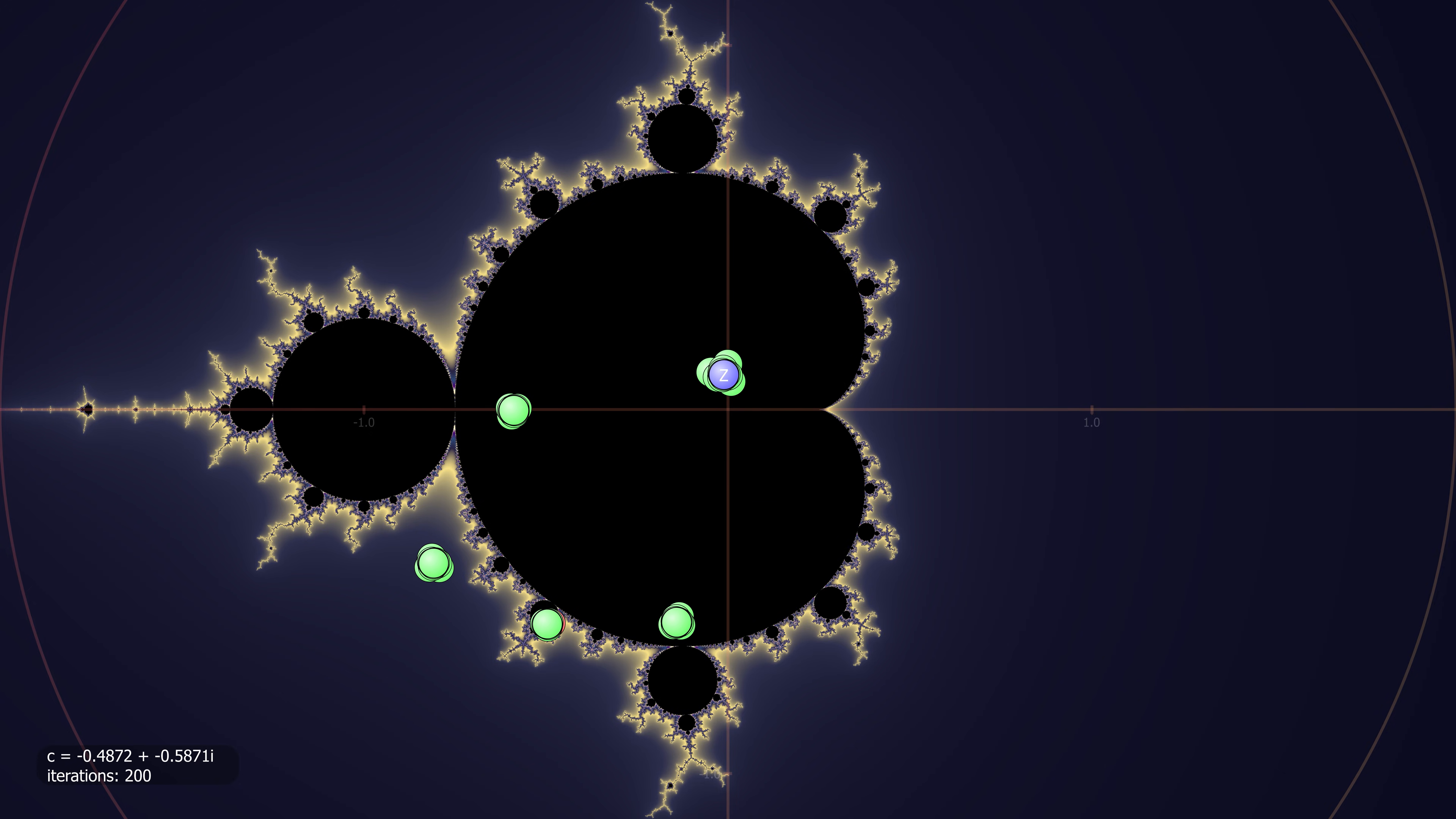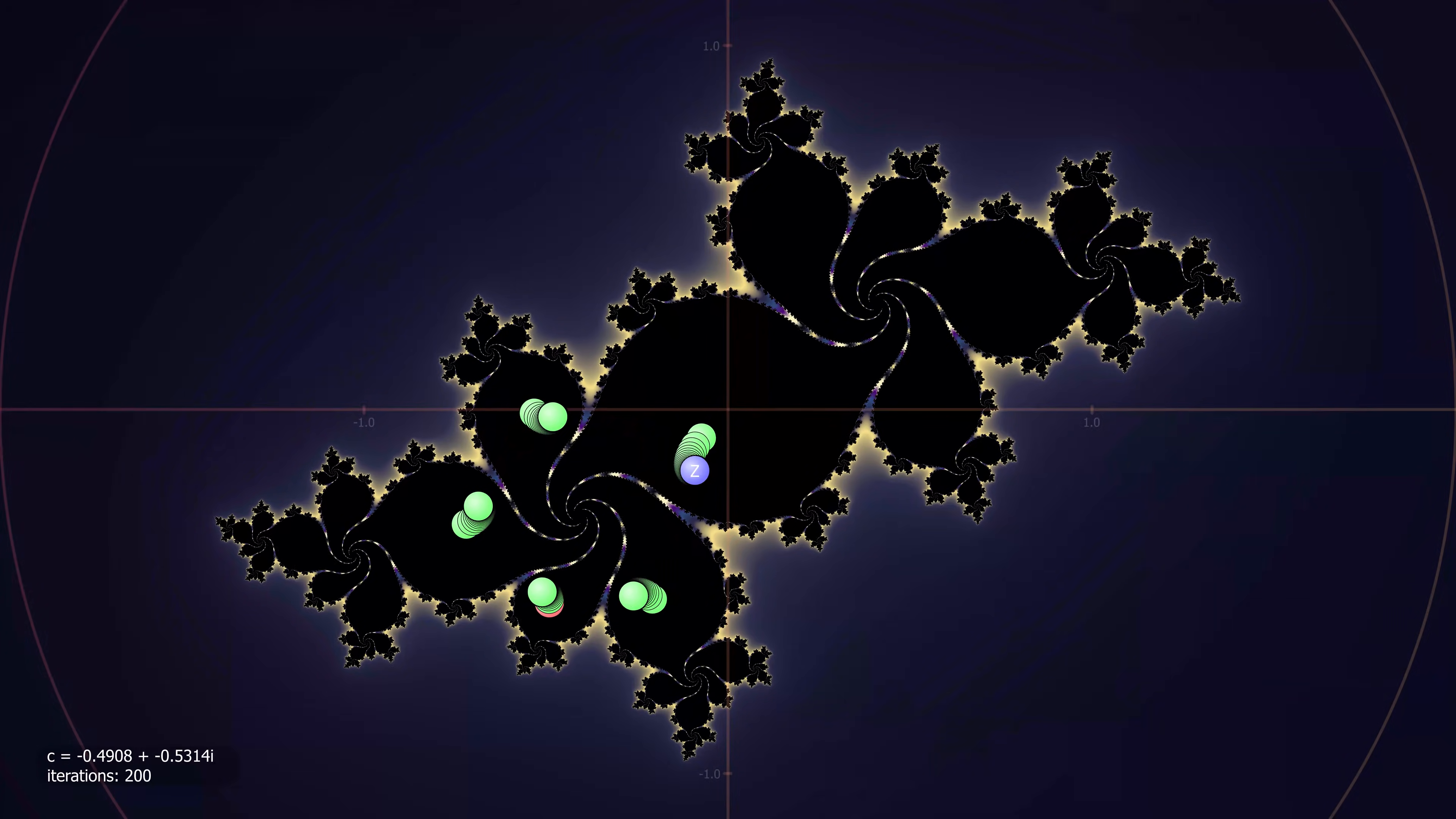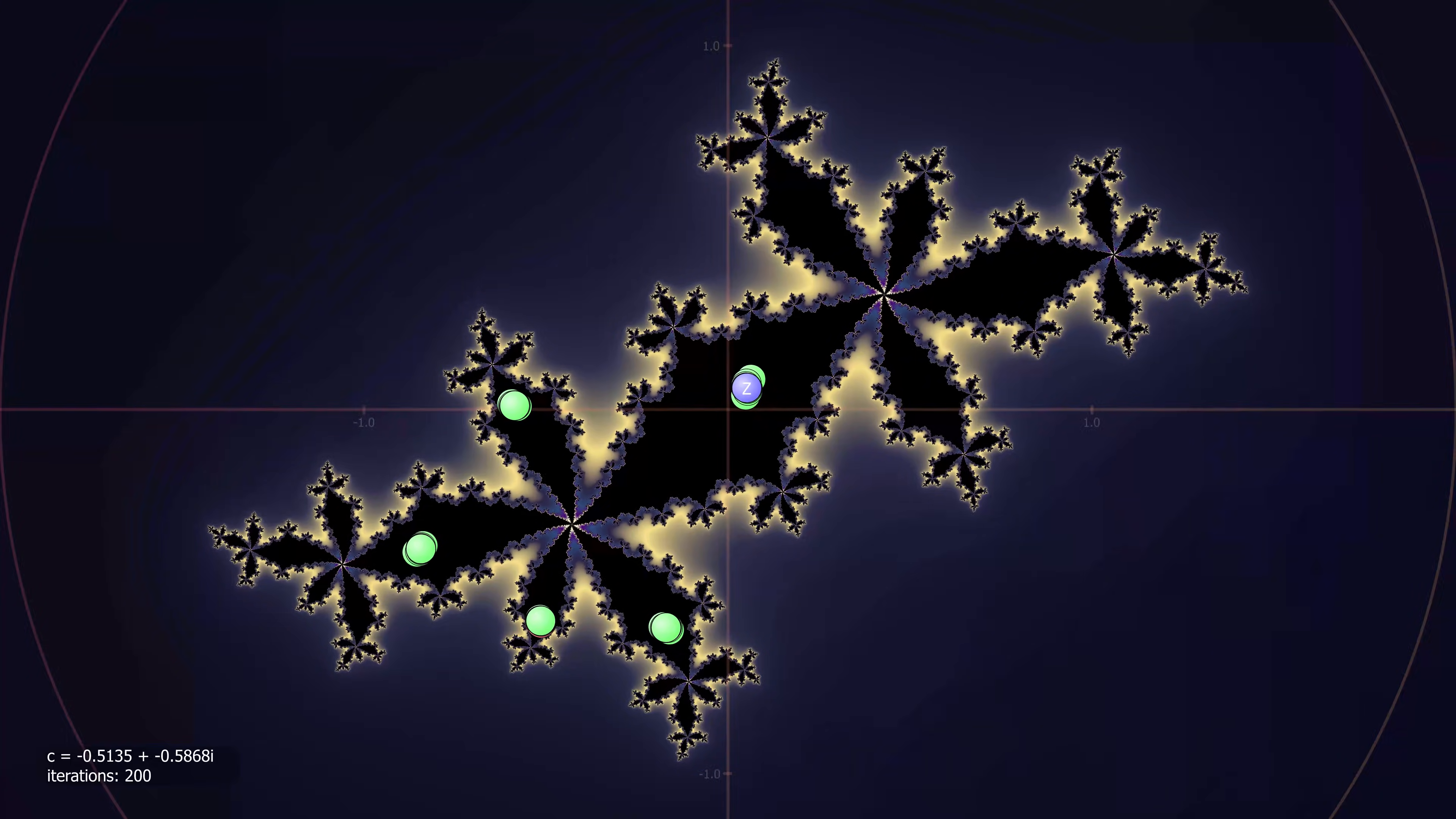With period five, five-way branching. The Julia set is changing shape as C moves, but it always has five branches available for the orbit to land on.